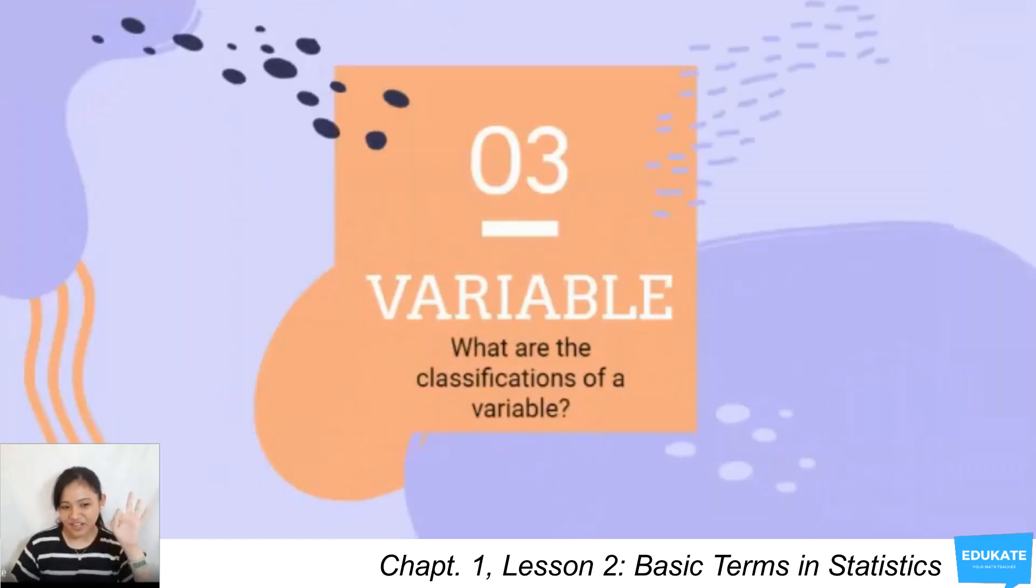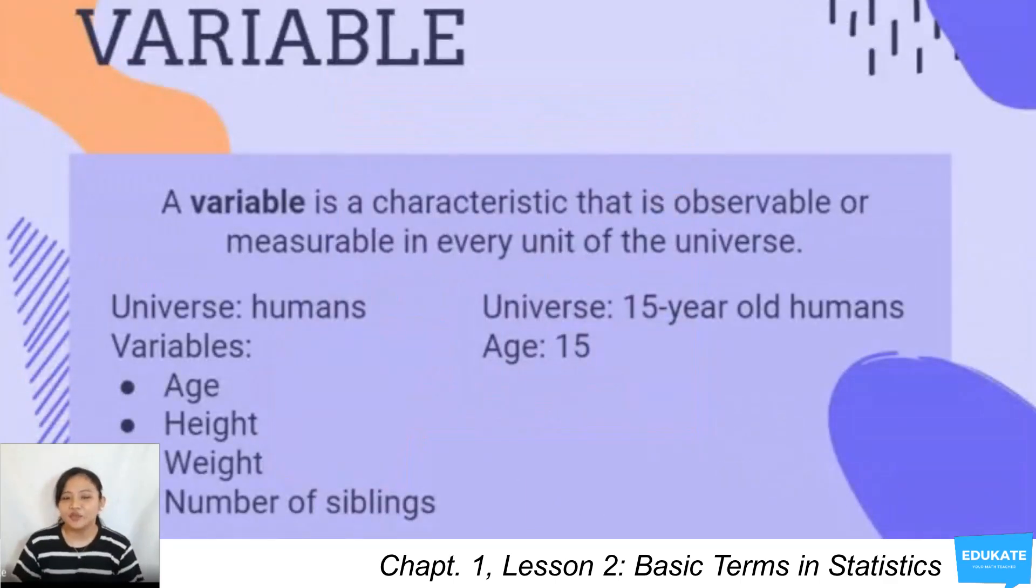Next, third term. We have here variable. What are the classifications of a variable? A variable is a characteristic that is observable or measurable in every unit of the universe.